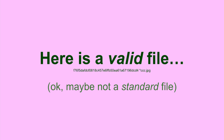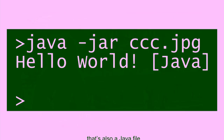Let's take an example. Here is a valid file — just to show the kind of valid files that I like to try. It's not exploiting everything, but it's maybe not a standard file. This is a JPEG picture that might ring a bell, and it's also a Java file, because why not? That's not really complex.